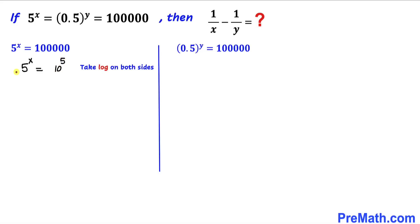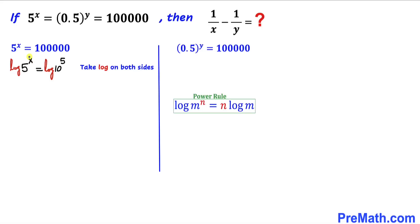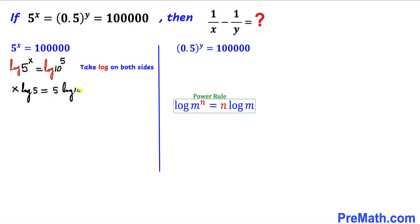Now let's take a log on both sides of this equation. Let's recall the power rule — according to this rule we can move these exponents. This x I'm going to move it all the way to the front. Likewise I'm going to move this exponent 5 to the front as well. So this can be written as x times log of 5 equals 5 times log of 10.